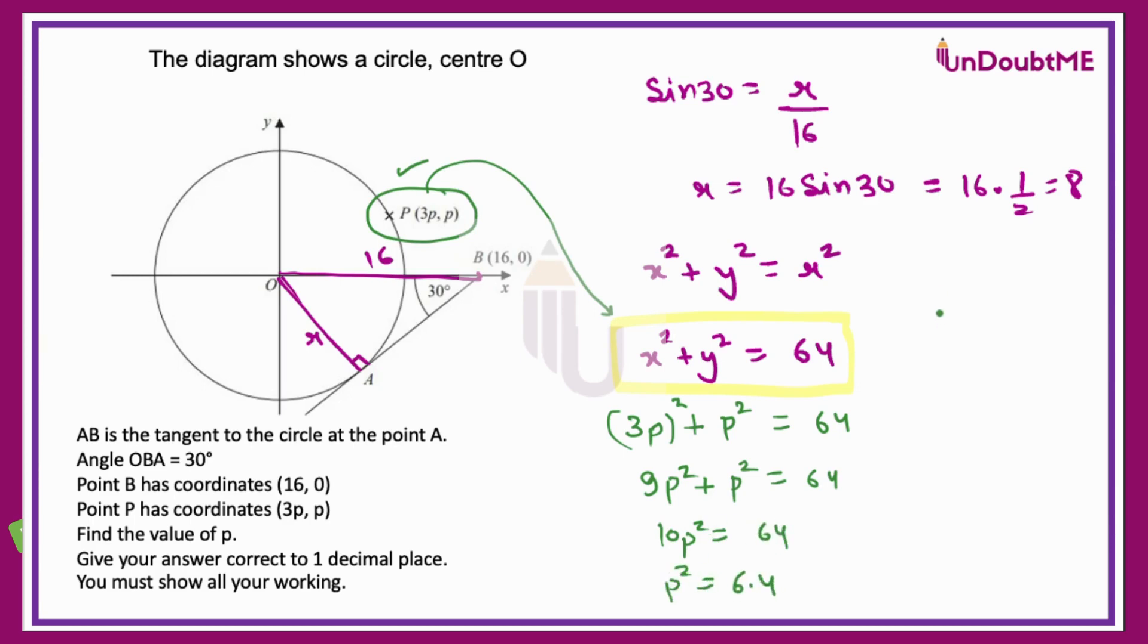The value of P will be square root of 6.4. We can use a calculator for this and they have asked to give your answer to one decimal place. So I can find square root of 6.4, that is 2.53. We can round it off to 2.5 as one decimal place. So this is the value of P and here we are done with this.